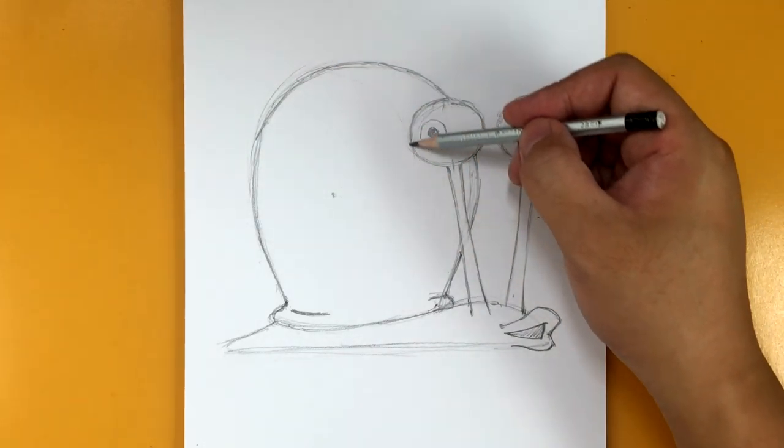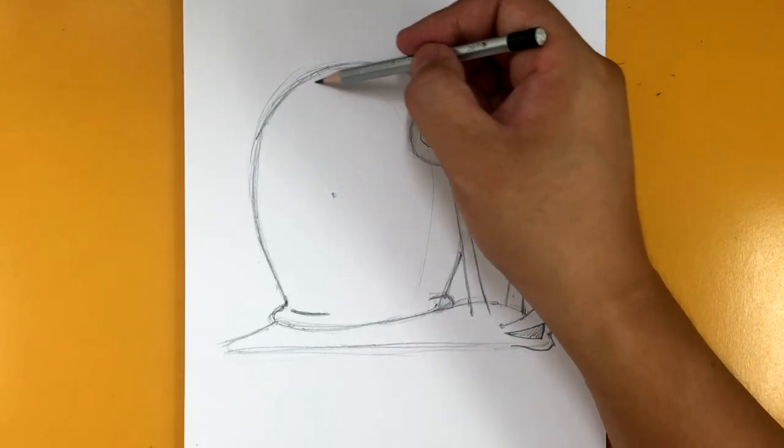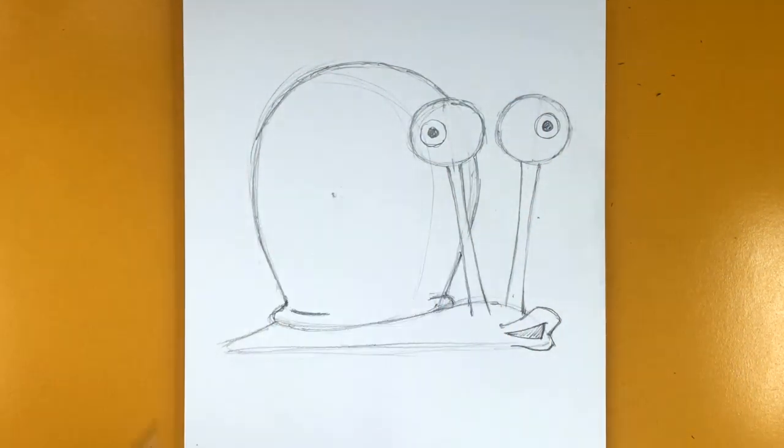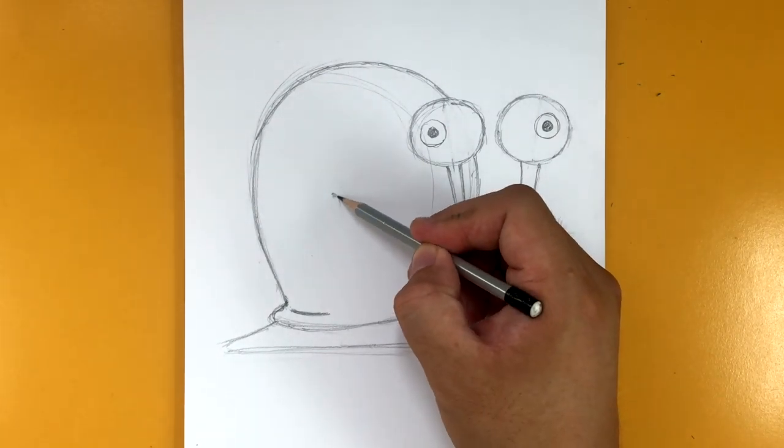Because if you think of the shell as sort of being on its side, so it kind of looks like this. Then this is the top and then the side of the shell. Here's the center right there.